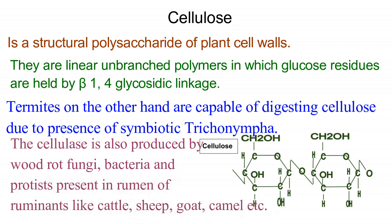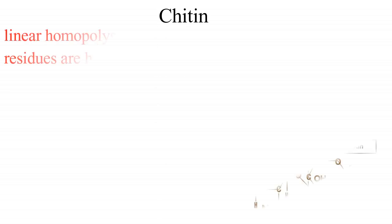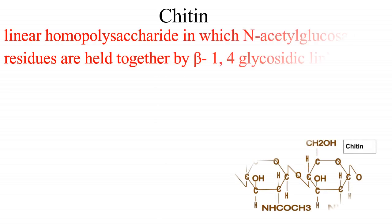Termites, on the other hand, are capable of digesting cellulose due to the presence of symbiotic Trichonympha. Cellulase is also produced by wood rot fungi, bacteria, and protists present in the rumens of ruminants like cattle, sheep, goat, camel, etc.